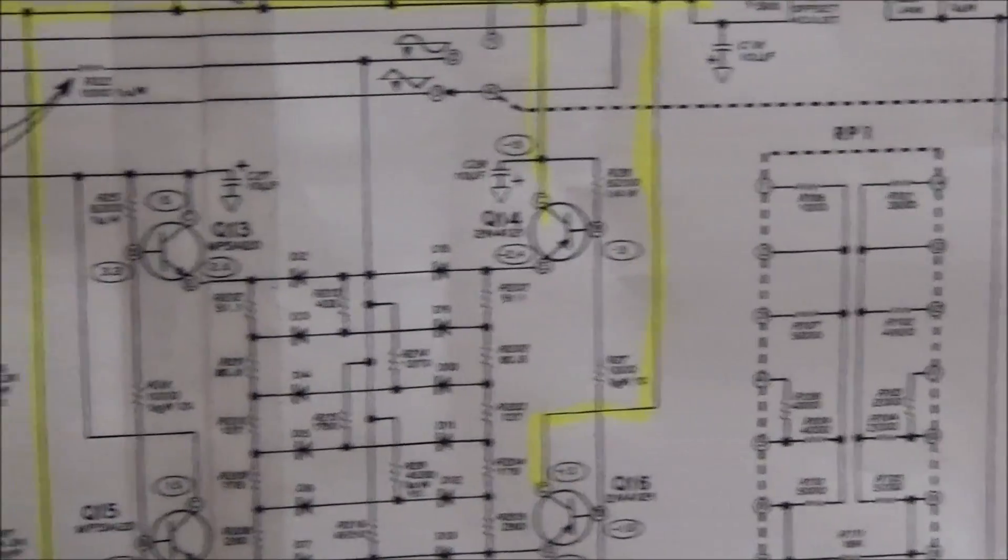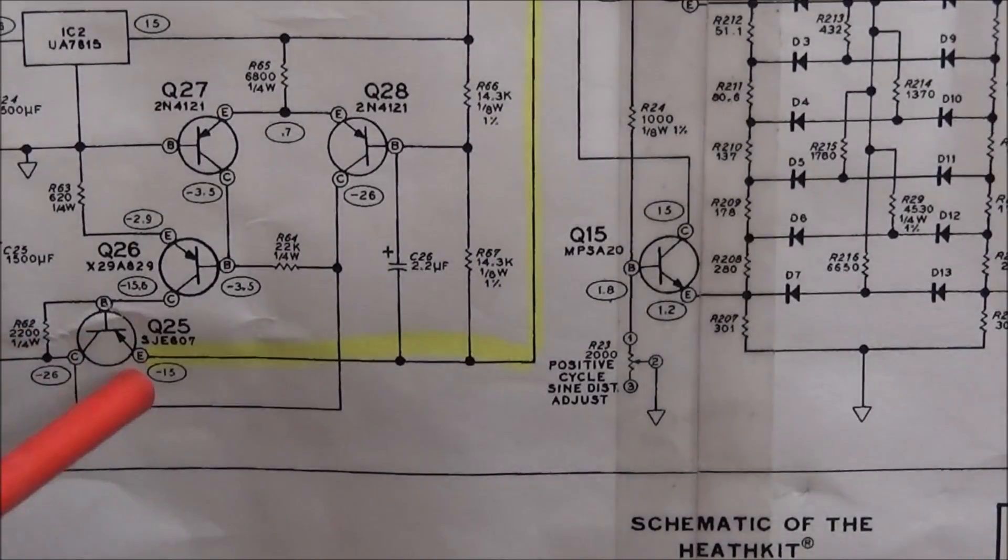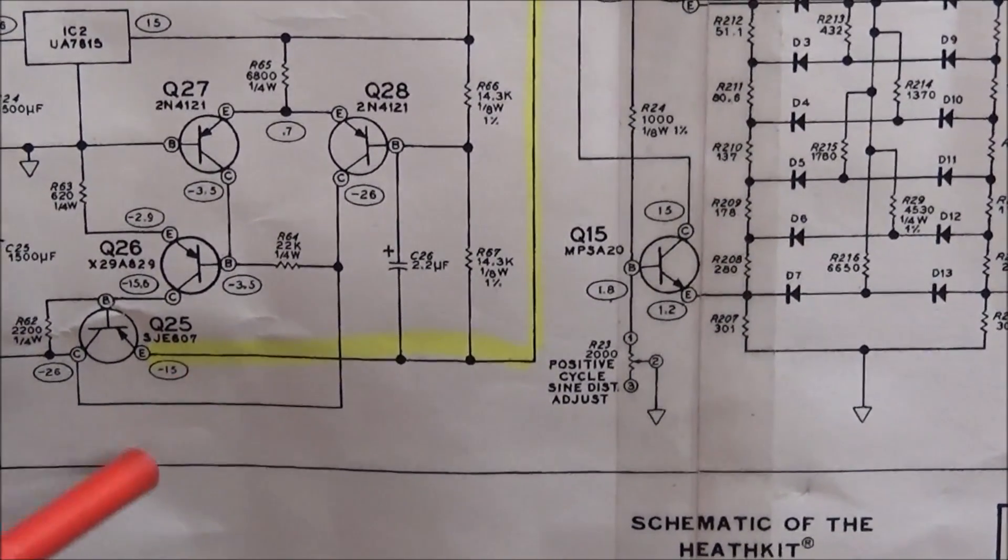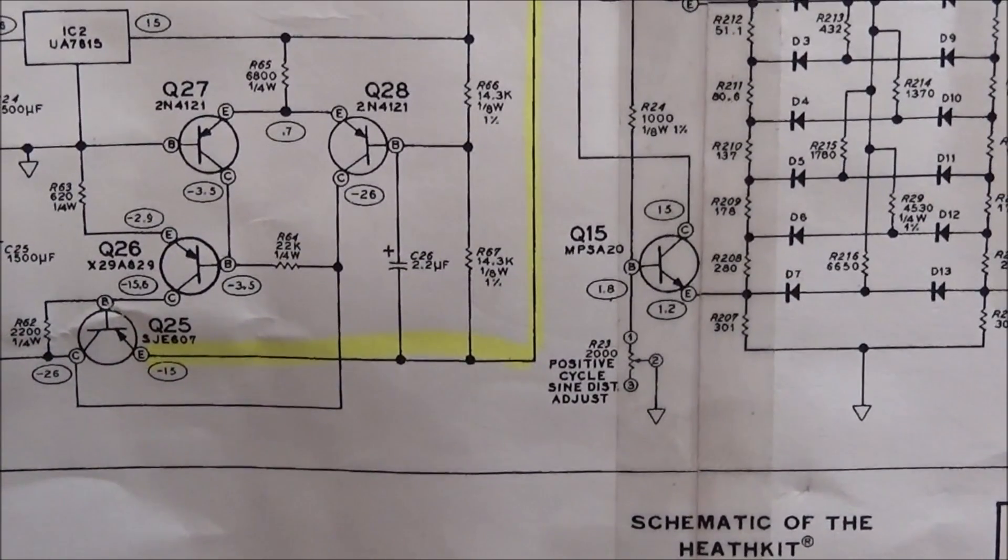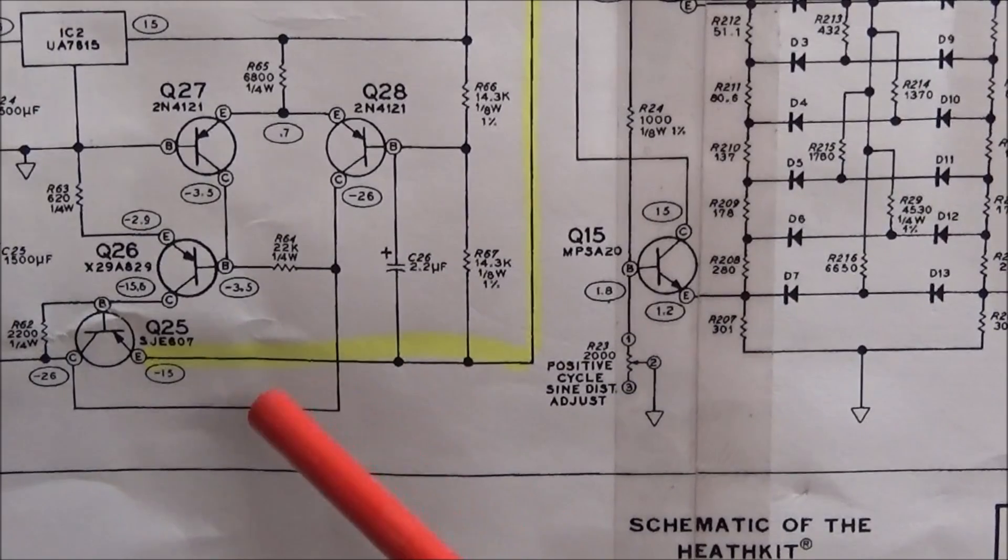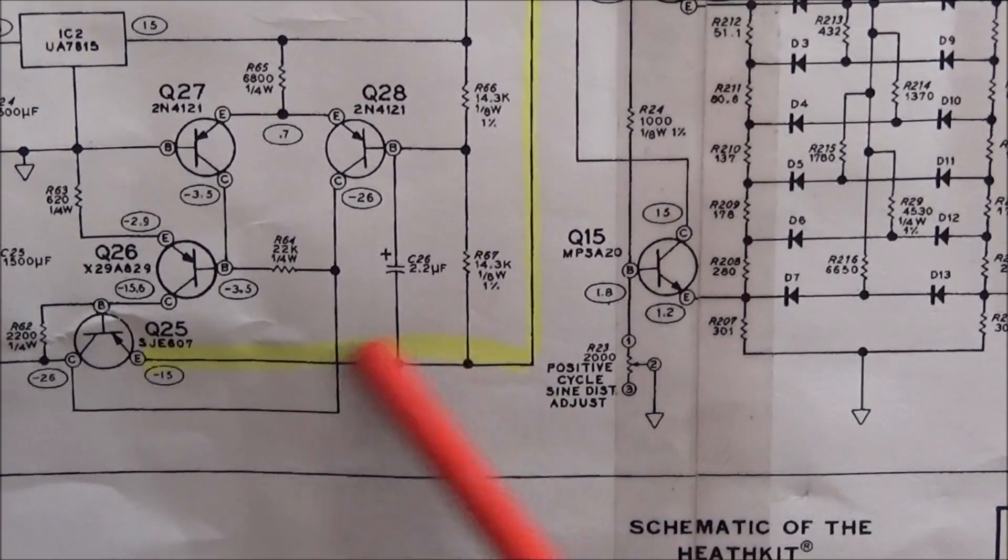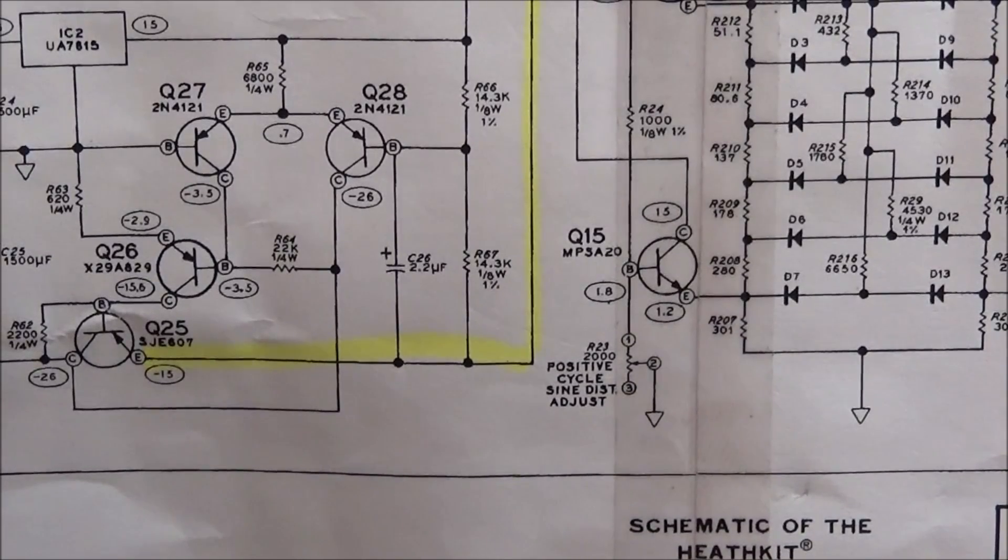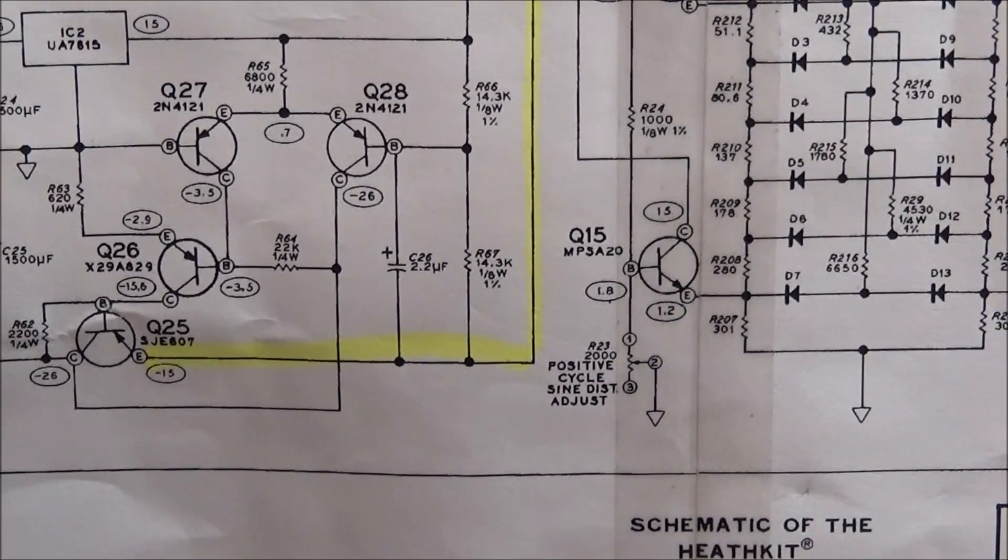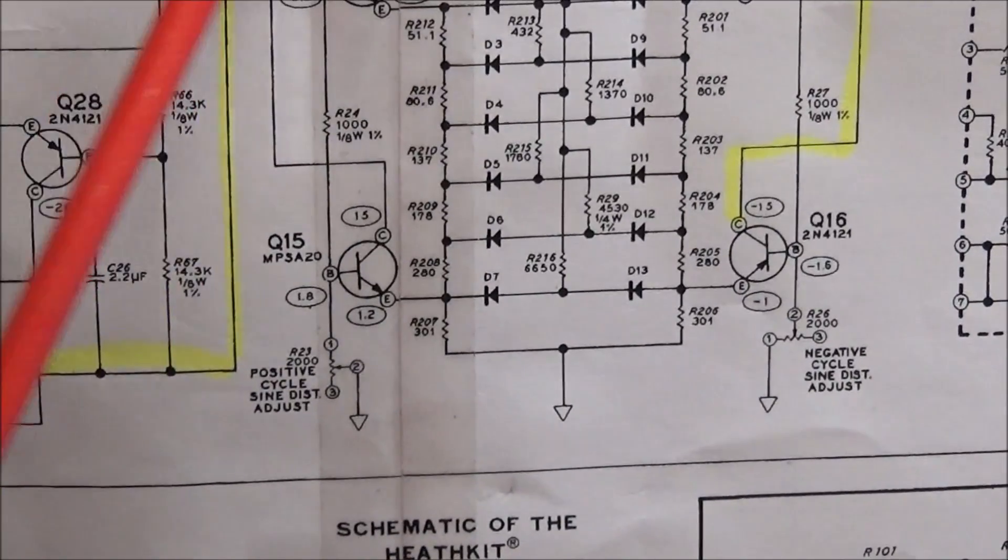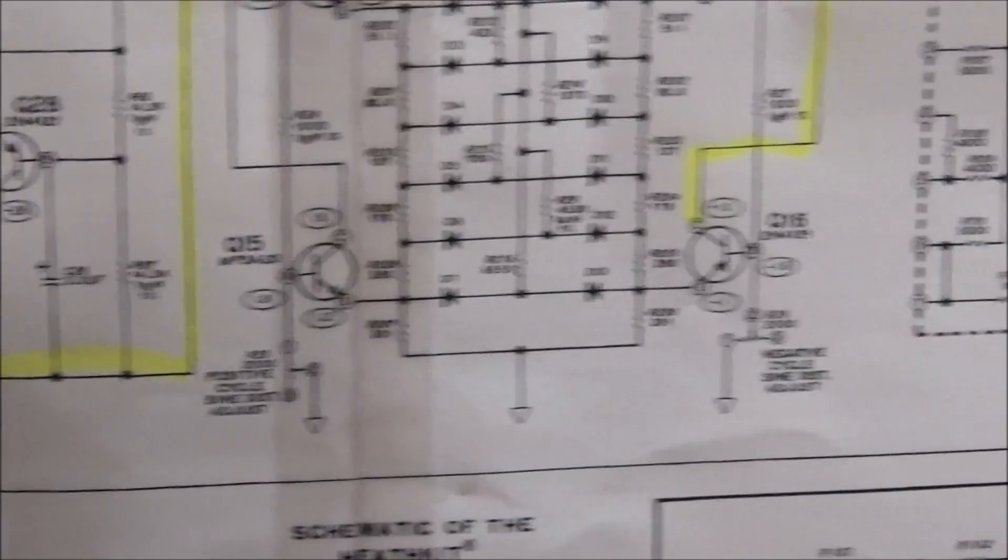I went ahead and pulled the emitter of Q25, which is the output of the negative 15 volt rail, and I do have 15 volts. When I measure with an ohm meter with no power from the emitter to ground, I have about three to four ohms, which tells me there is something shorted inside the unit.